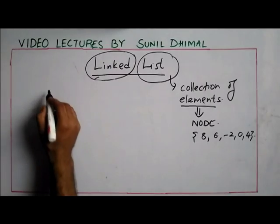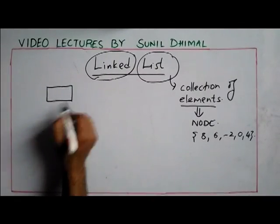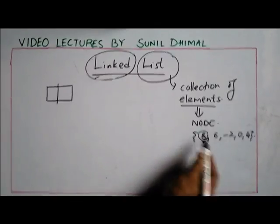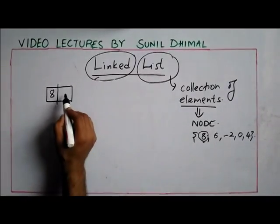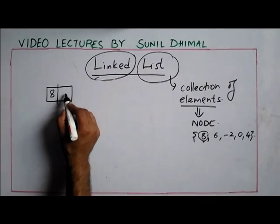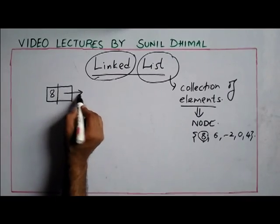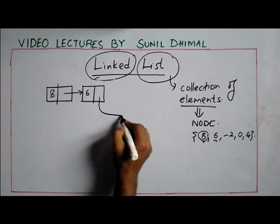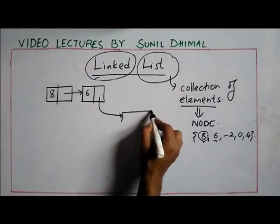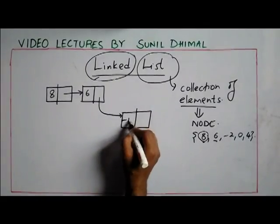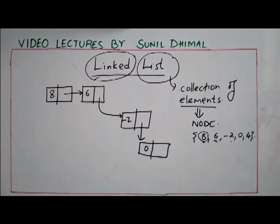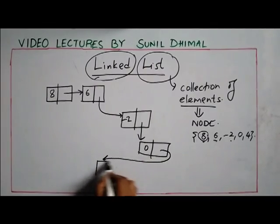As I said, each element in a linked list is a node, and each node has two parts. The first part of node one contains the element 8, and the second component is the link to the next node — which contains element 6. That node links to the next node, which is -2. That is linked to the next node, which is 0, and 0 links to the next node, which is 4.